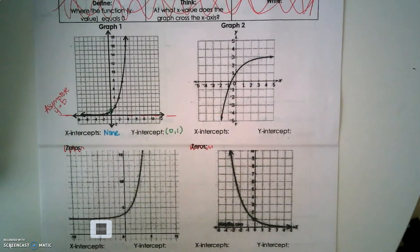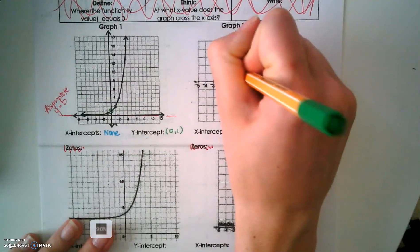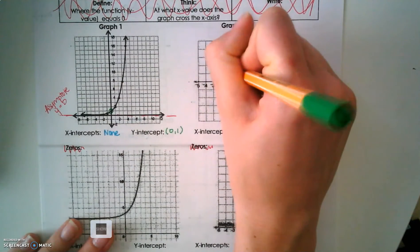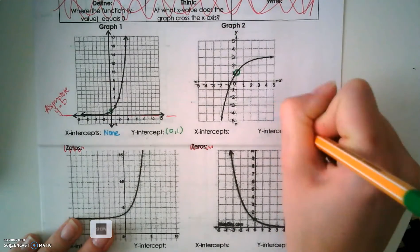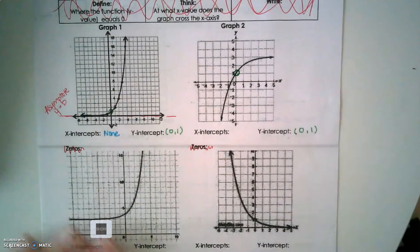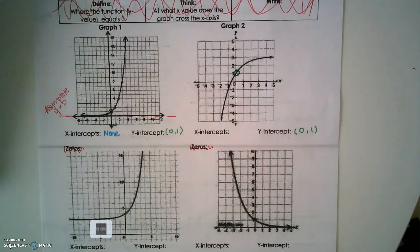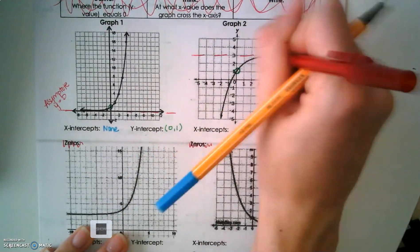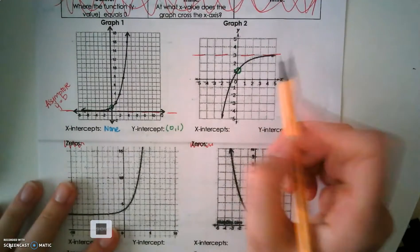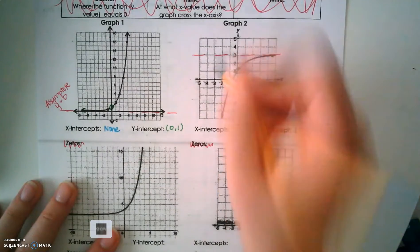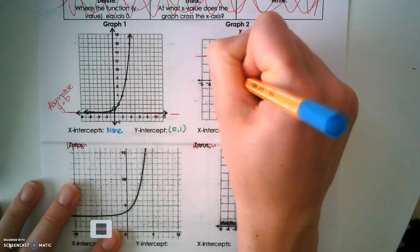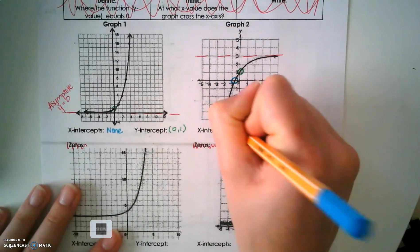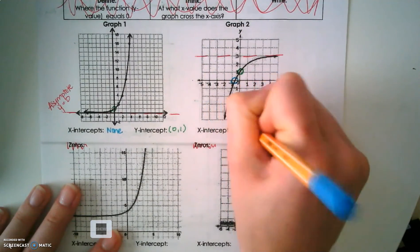Graph number two — again, let's find the y intercept first. That's where it crosses the y axis, again at (0, 1). The x intercept does exist because my asymptote is above the x axis. So as we follow this graph, it does hit. We'll give it a good estimate at (-1/2, 0).